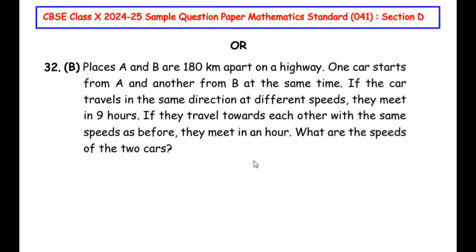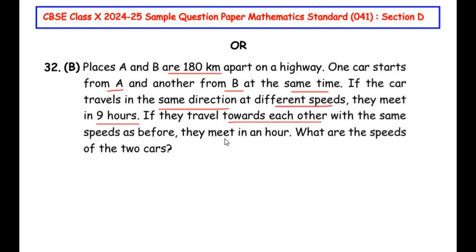This question is from the chapter on pair of linear equations in two variables. Places A and B are 180 kilometers apart on a highway. One car starts from A and another from B at the same time. If the cars travel in the same direction at different speeds, they meet in 9 hours. If they travel towards each other with the same speeds, they meet in 1 hour. What are the speeds of the two cars?